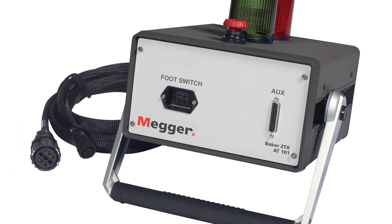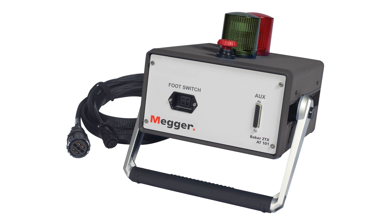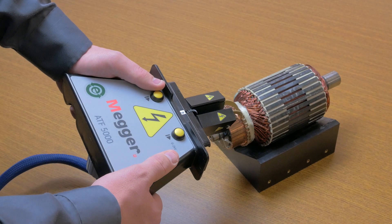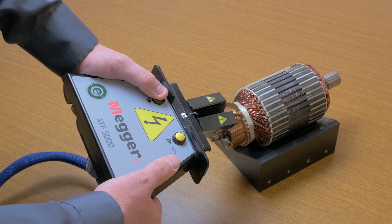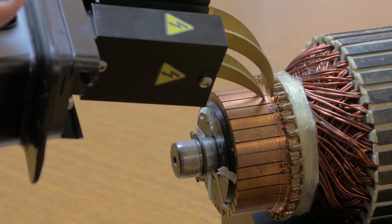DC motor armatures can also be tested using the Baker ZTX adapter with a Baker static motor analyzer. The ZTX lowers the surge voltage while increasing the current. This allows bar-to-bar testing of the armature with excellent fault location.